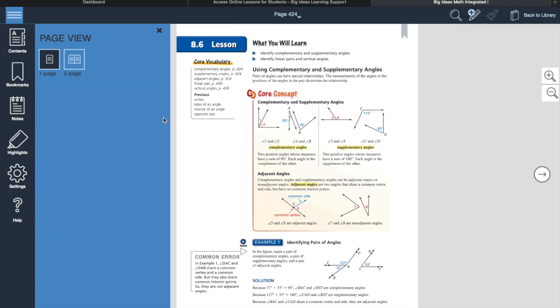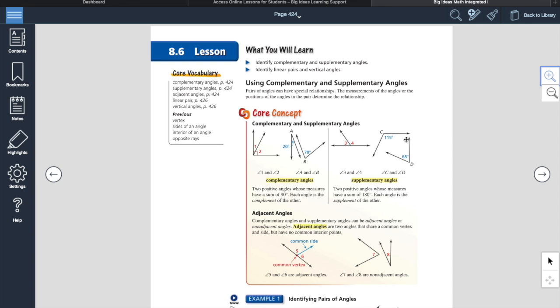On the right side is your magnifying glass. So you can enlarge this and you can go through this. And this is excellent. So 8.6, there's a lot of key terms here. So we're looking at supplementary angles, supplementary, complementary, adjacent.